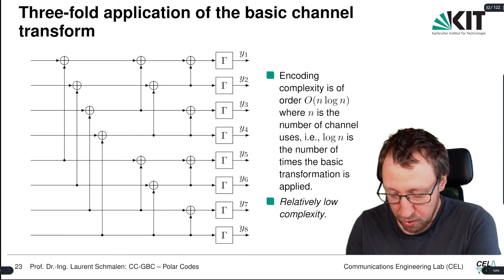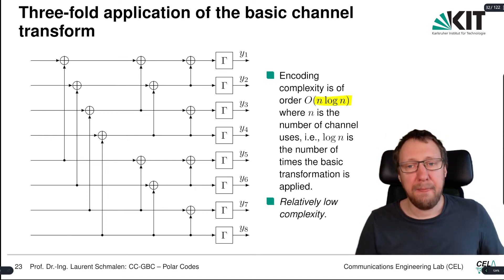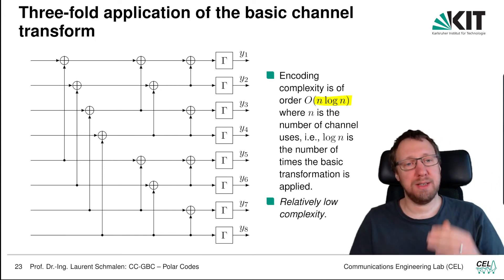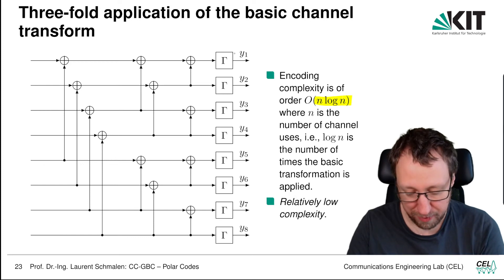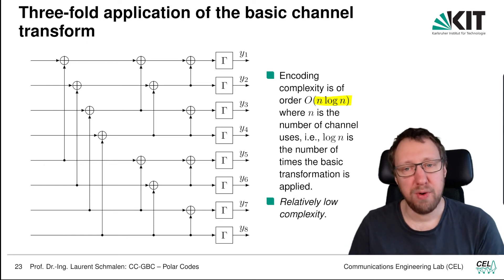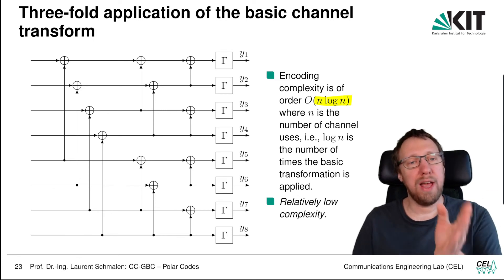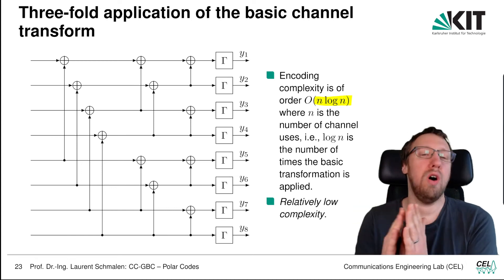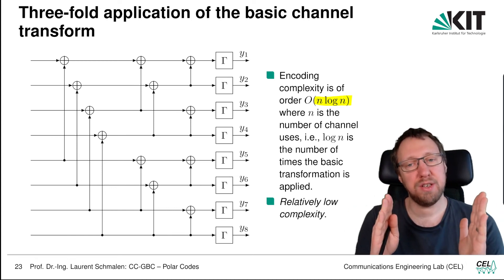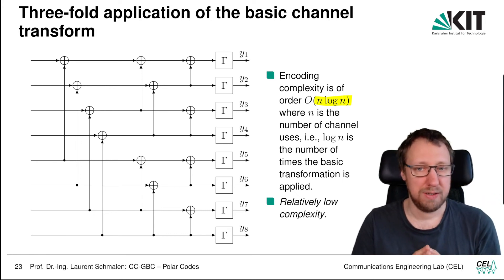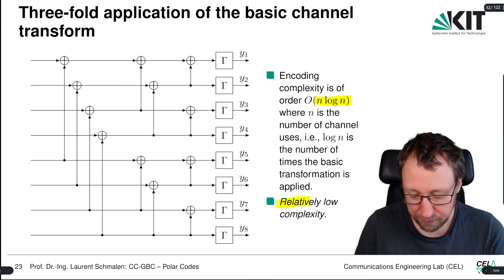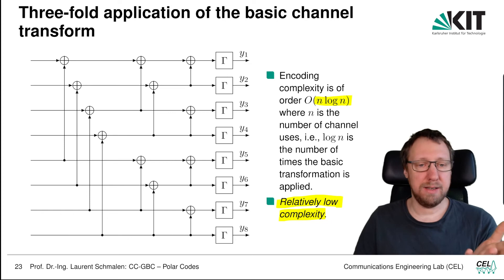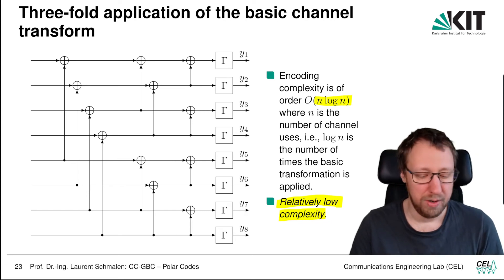The complexity of this recursive construction is n log n, where n is the number of channel uses. Here with eight channels, we have log₂(8) = 3 stages, and in each stage we need on the order of n operations. This relatively low n log n complexity is manageable, and fast algorithms exist for implementing this.